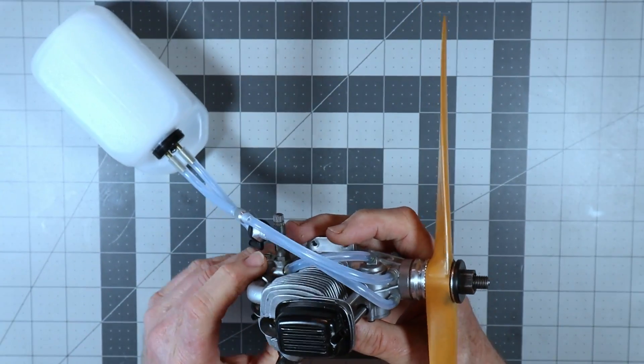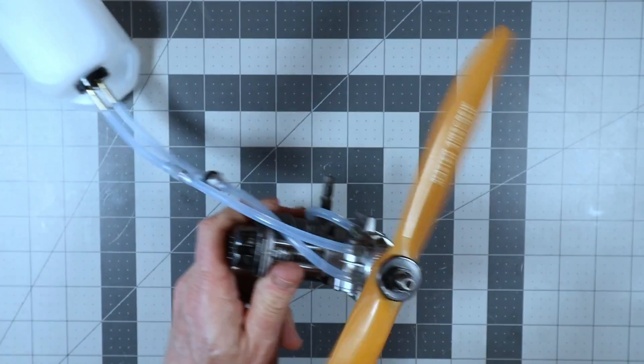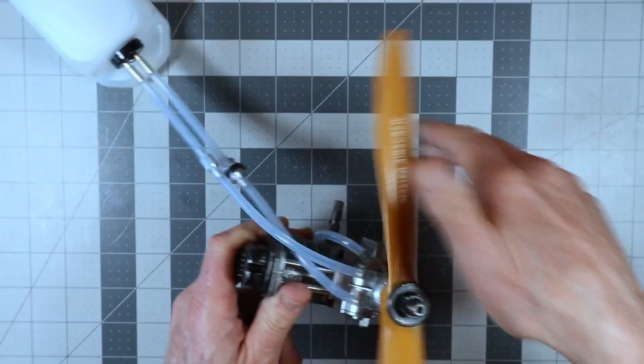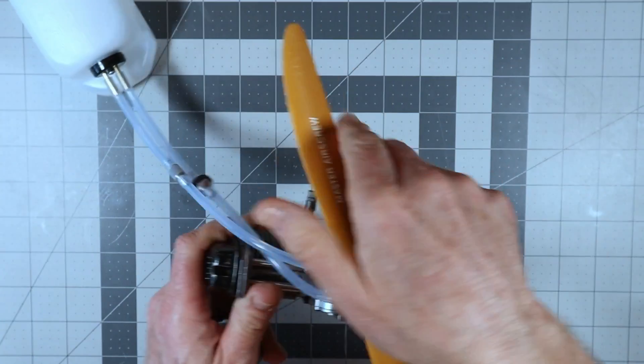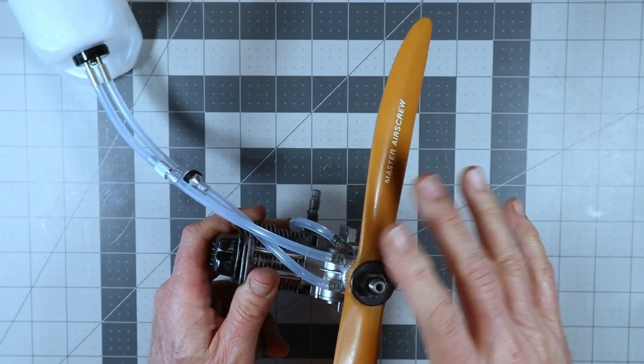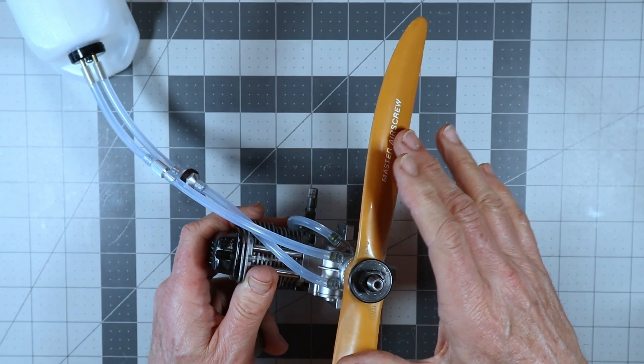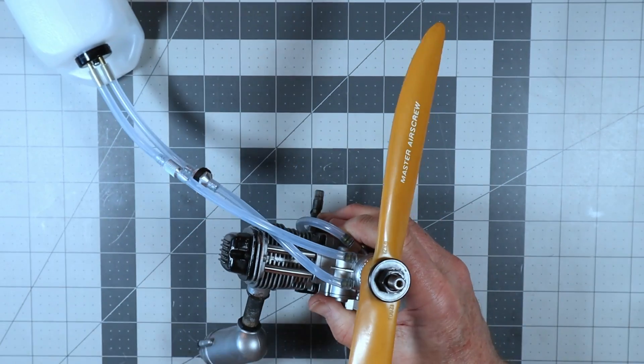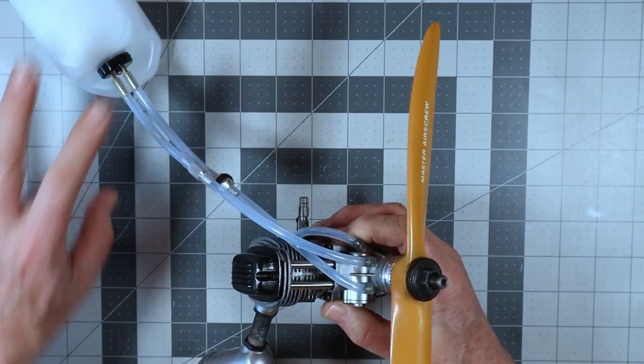I don't know if I got the throttle fully open. I don't know if that really matters too much. One of the YS engines I ran a few years back, I think it was the 140, might have said something like with the throttle open, rotate the prop 10 times and then close the throttle and rotate it 10 times. These instructions don't say that.